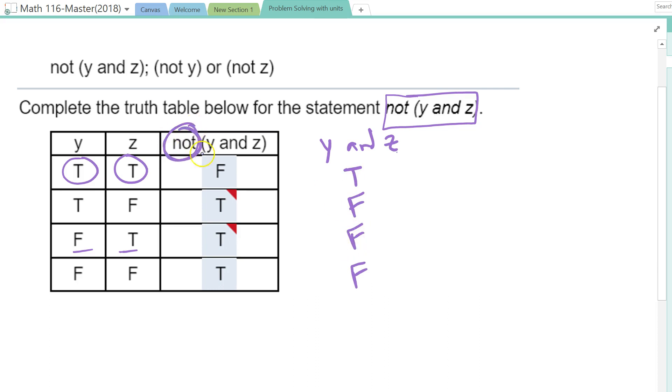So if I want to do not Y and Z, then it's the opposite of this column here. So I'd have false, true, true, true. So this would be the correct one.